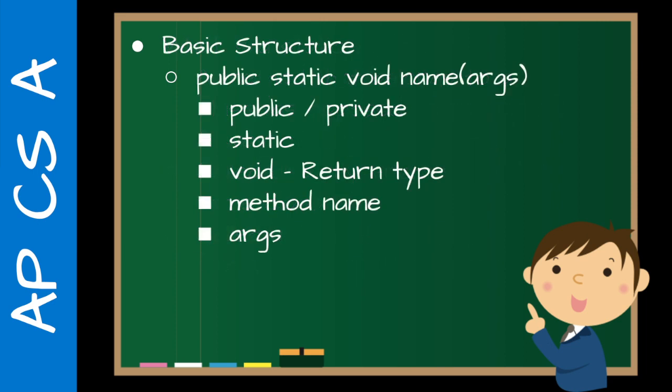So the basic structure, we see public static void, and not always void, but public static, which is the return type, the name of the method, and then whatever arguments go to that method. So we have a choice between public and private. We have a choice, in this case, it's static or not static. And the return type is what type of value does it return? Void means it doesn't return a type. Then we have our method name, which follows the same naming conventions as camel case. Then whatever the arguments are, these are the values that we are sending to that particular method.